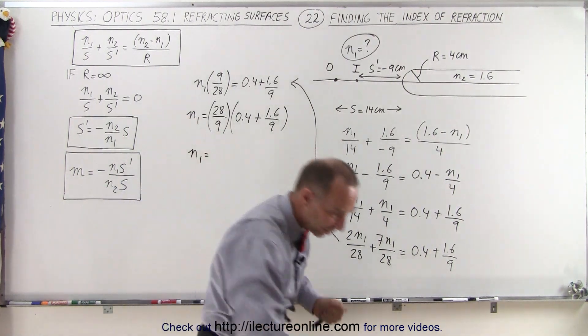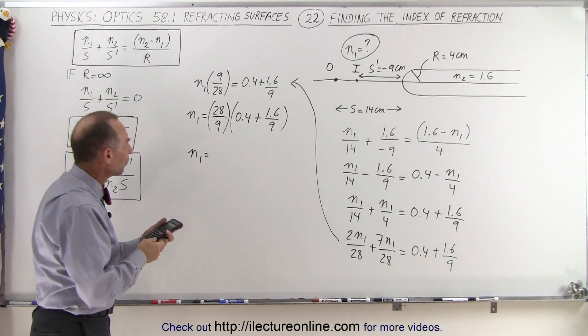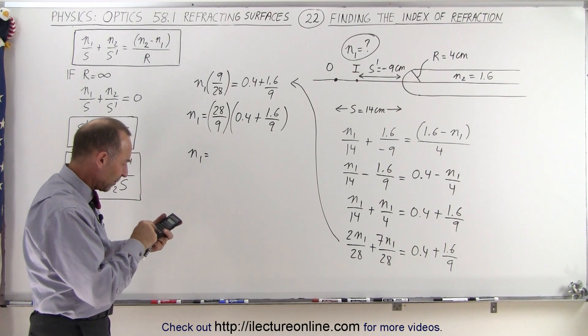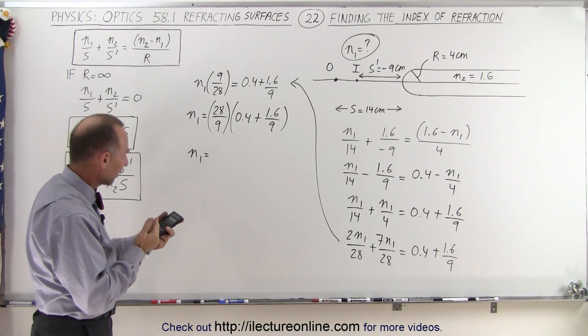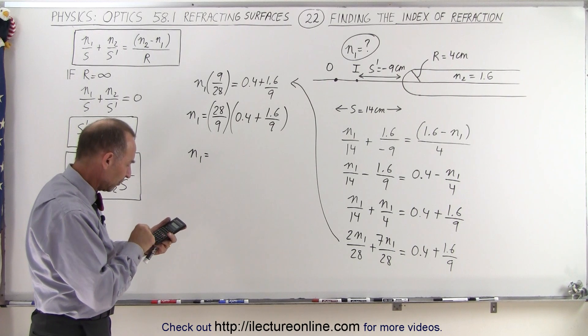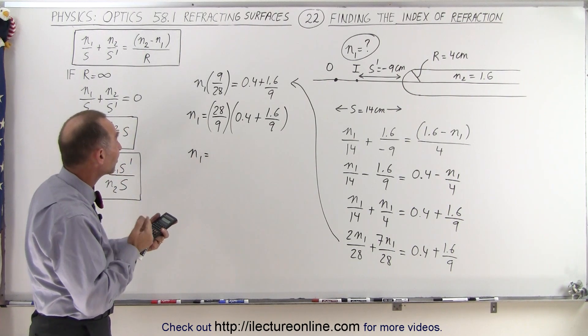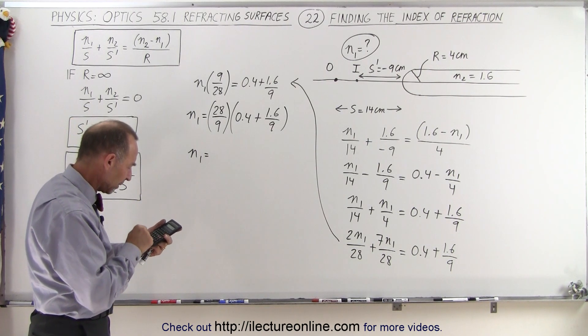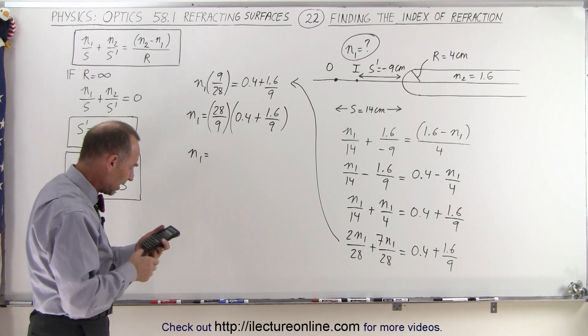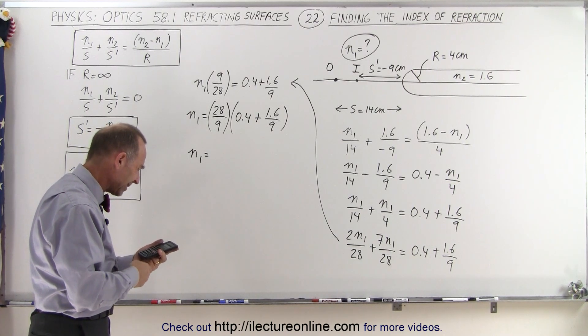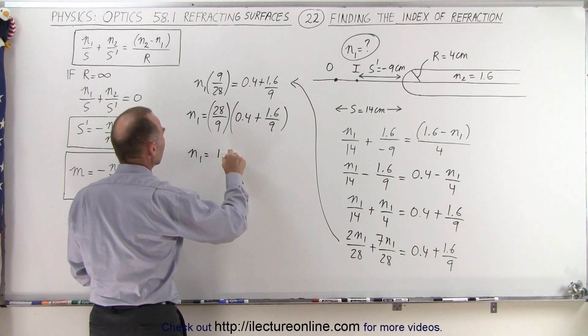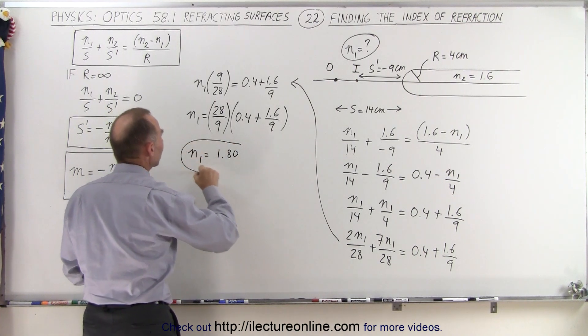So first we take 1.6 divided by 9, which is about 0.177, add that to 0.4, now we have 0.577, multiply by 28 and divide by 9, and we get 1.7975. Well, that's about 1.80, and so that's the index of refraction of the unknown liquid based upon what they have given us, and that's how we do that.